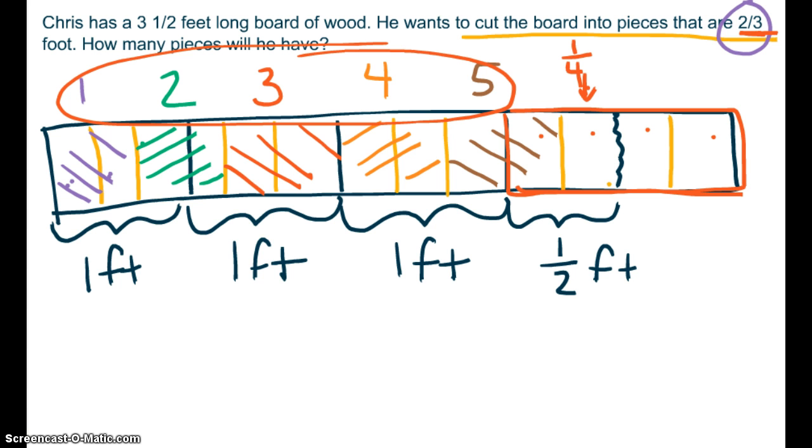So let's think about what it is that we did. We started with 3 1/2 feet of board and we split it into equal size pieces. When you are splitting into equal size pieces, you are dividing. So we divided it by 2 thirds.